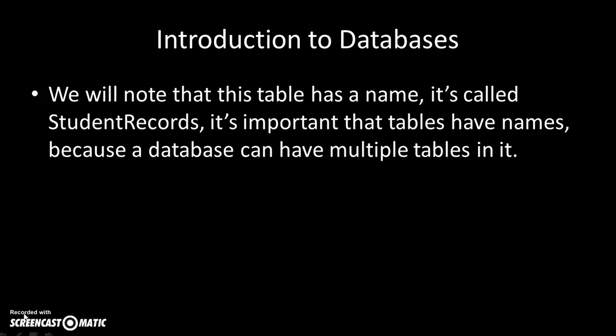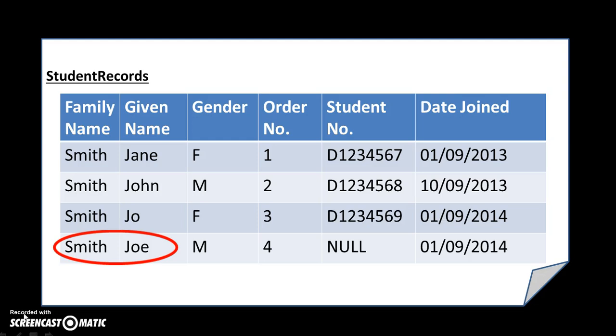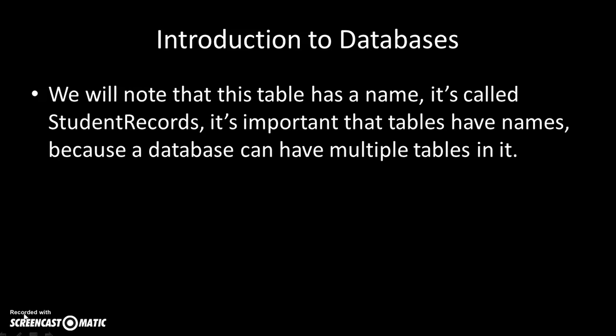We'll also note one more thing: the table has a name — it's called Student Records. It's important that every table has a name, because in a database you can have multiple tables. So you could have Student Records, Staff Records, Exam Timetable, Course Table, and many different things. Having a name on each table allows us to differentiate them.